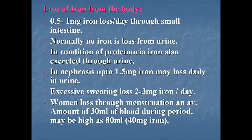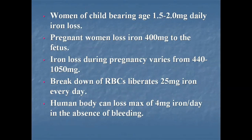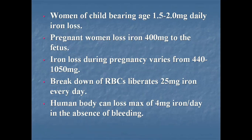In addition to the above losses, women lose iron through menstruation, which on average involves about 30 ml of blood during a period and may be as high as 80 ml — which contains about 40 mg of iron. Daily iron loss in women of childbearing age amounts to 1.5 to 2 mg. Women also lose iron during pregnancy and during postpartum hemorrhage after birth.